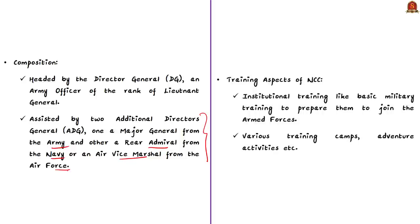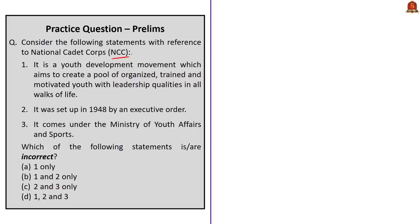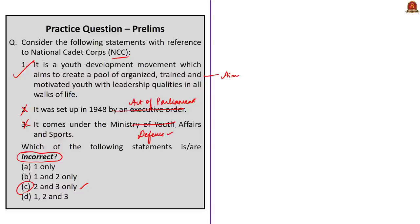The institutional training includes basic military training to cadets as a part of the curriculum, to prepare them to join the armed forces. Other important aspects of NCC training include various training camps, adventure activities, military training, etc. Regarding the practice question on NCC, it is a three-statement question where you need to choose incorrect statements. Statement 1 is correct (NCC aim), so the answer is option C — statements 2 and 3. Statement 2 is wrong because NCC was created by an Act of Parliament, not an executive order. Statement 3 is incorrect because NCC comes under the Ministry of Defense, not the Ministry of Youth Affairs and Sports.